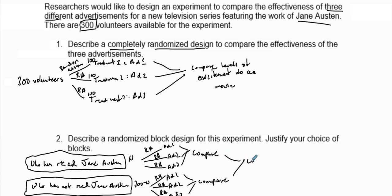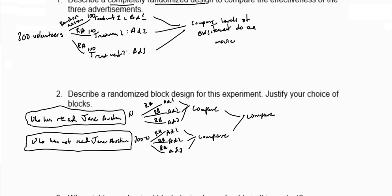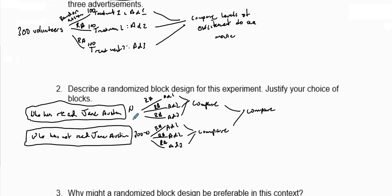We compare results for those that read Jane Austen and those that did not read Jane Austen. This gives us a better indication of which ads are more effective, because people who have read Jane Austen might have a higher favorability rate since they like the books. Those that haven't read her may respond differently, and grouping them all together might skew our data. So we split the 300 volunteers into these two groups, randomly assign them to three ads, and compare the results.